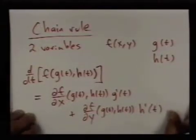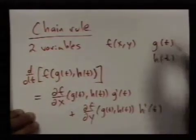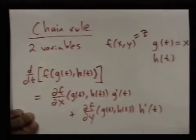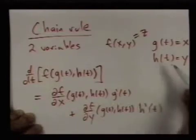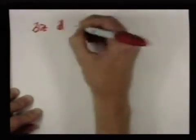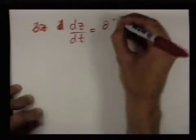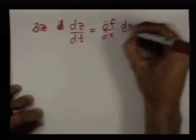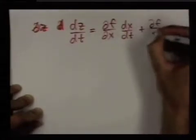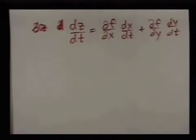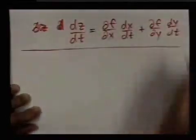This big long formula also has a shorthand in Leibniz notation. Think of z as a function of x and y, x as a function of t, and y as a function of t as well, given by g and h respectively. Then the shorthand is: the derivative of z with respect to t equals df/dx times dx/dt plus df/dy times dy/dt. That's the shorthand in Leibniz notation, and now let me go through an example.